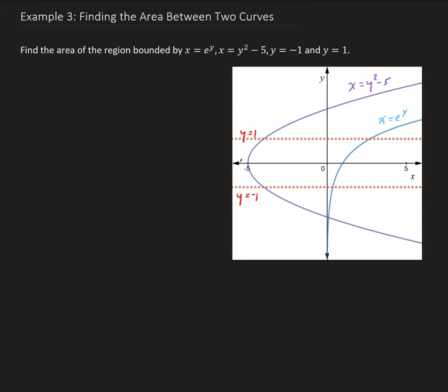In this example, we want to find the area of the region bounded by x equals e to the y, x equals y squared minus 5, and the region bounded between y equals negative 1 and 1.